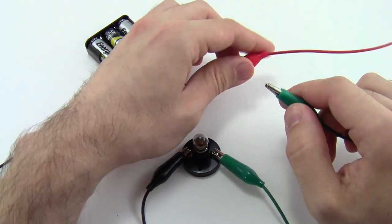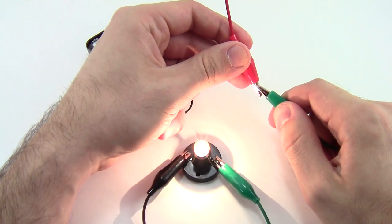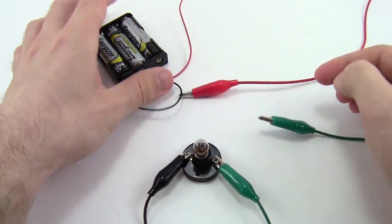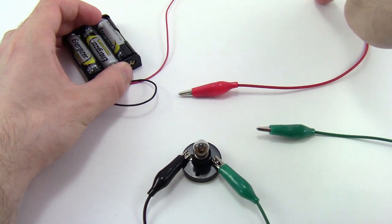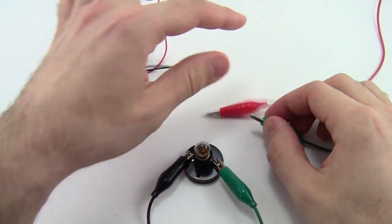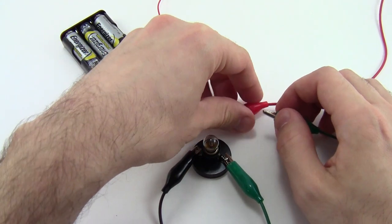However, if I take the free ends of the red and green alligator clips and touch them together, I have a closed circuit so electricity can flow in a loop through this red wire, through the green alligator clip, through the light bulb, and then back through the black alligator clip and wire to the battery pack.